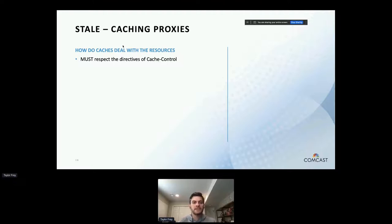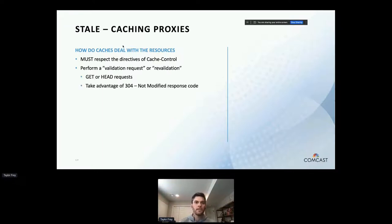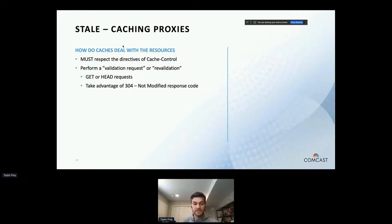The same holds true for caching proxies. They are required to follow and abide by the directives set by cache-control and these other headers. If the resource is not yet considered stale, the caching proxies will continue to serve the content they have without checking with the server. However, we can perform an actual validation request. While continuing to serve fresh objects, once the caching proxies know they're stale, we issue a validation request — a GET or HEAD — trying to query the server if something has changed. You'll typically see this done with a HEAD request because we're primarily concerned with the 304 status code, meaning the content has not been modified and we can continue to serve what we have as a fresh resource.